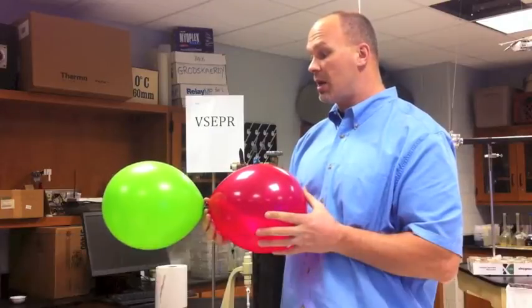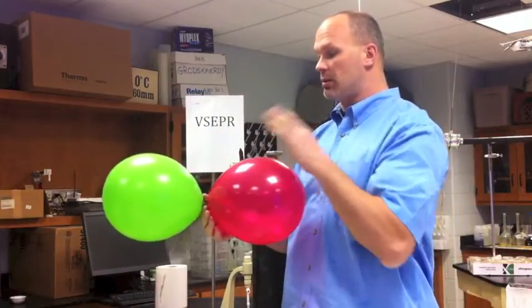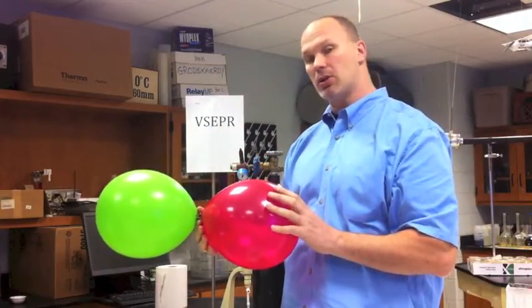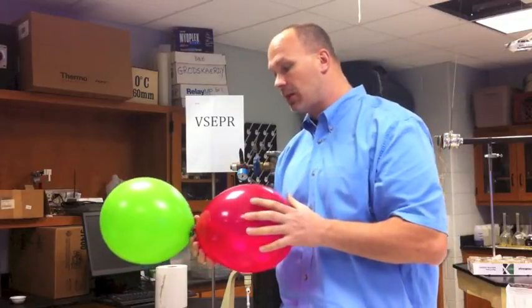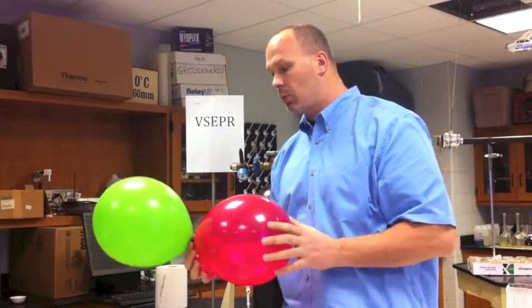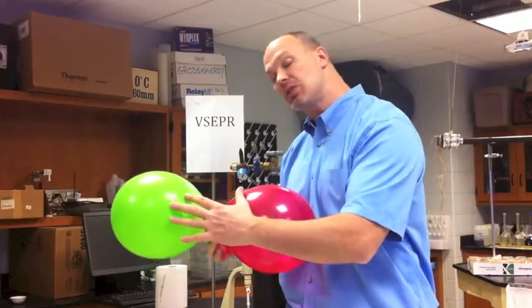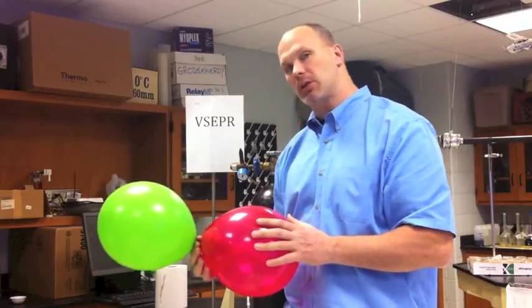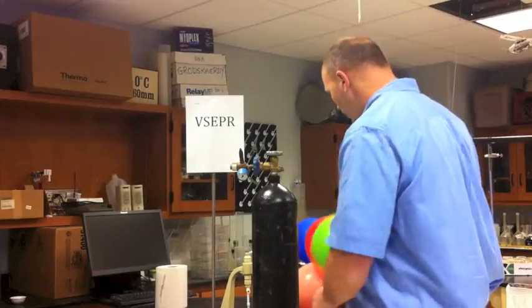The reason why there's a bonding of 180 is that there's no central electrons to bond in any other direction. Lone pairs or bonding electrons around a central atom will take the shape, or take some stable shape, based on the repulsion of other electrons. That's the VSEPR theory.